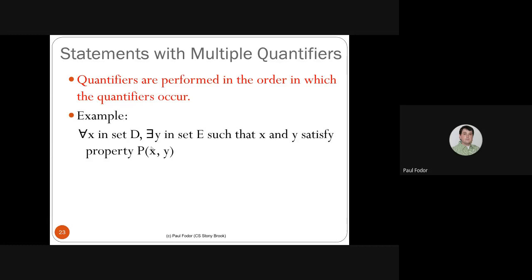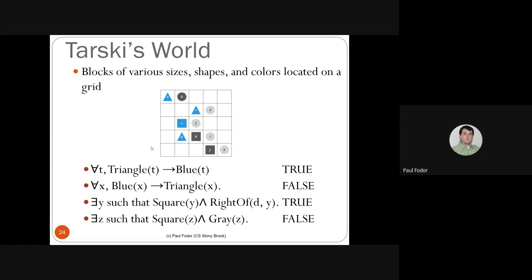If we swap the two quantifiers, it becomes a completely different formula: 'there exists Y in E such that for all X in D, P(X,Y).' This says there is a single Y that works for all elements X in D — a fundamentally different meaning from the original.